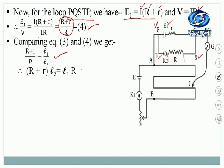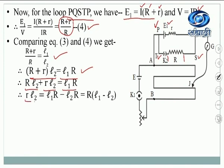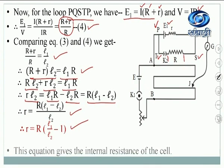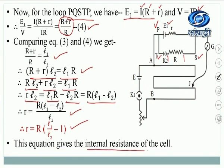Simplifying: (R + r) into L2 equals L1 into R. Expanding: R·L2 + r·L2 equals L1·R. Therefore r·L2 equals R(L1 - L2), which gives small r equal to R into (L1 minus L2) upon L2. This can also be written as r equal to R into (L1 upon L2 minus 1). With this equation we can determine the internal resistance of the cell.